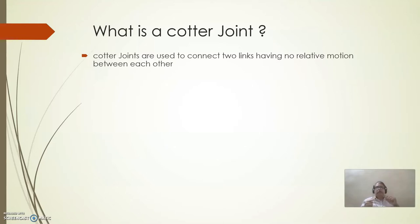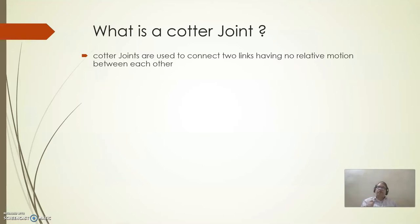In the crank and connecting rod pin joint we are using, that allows the motion — that thing is there in the knuckle joint. But in the cotter joint, we are not going to get any kind of relative motion between the pin and its mating parts. The pin used is called a cotter pin. Cotter joints are used to connect two links having no relative motion between each other.